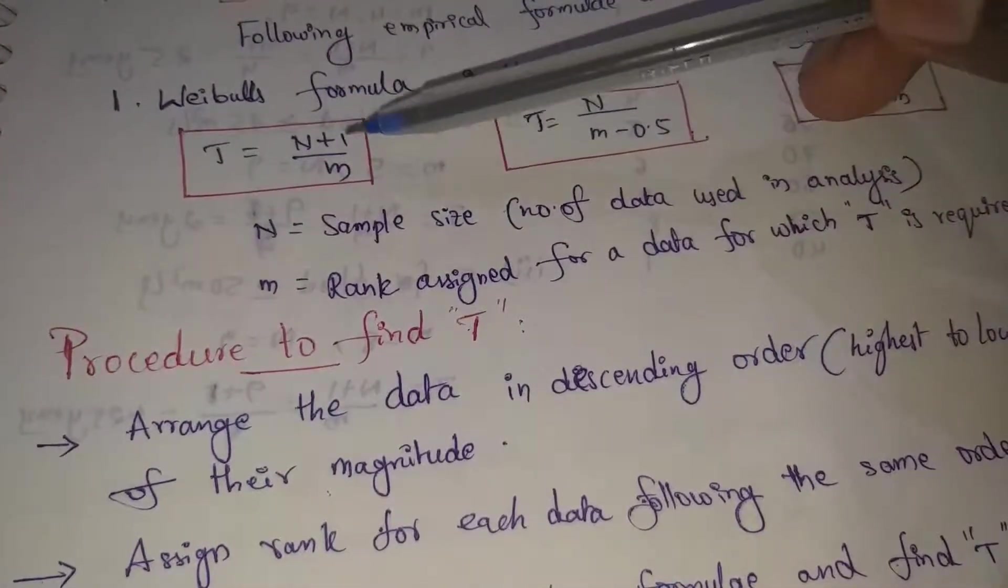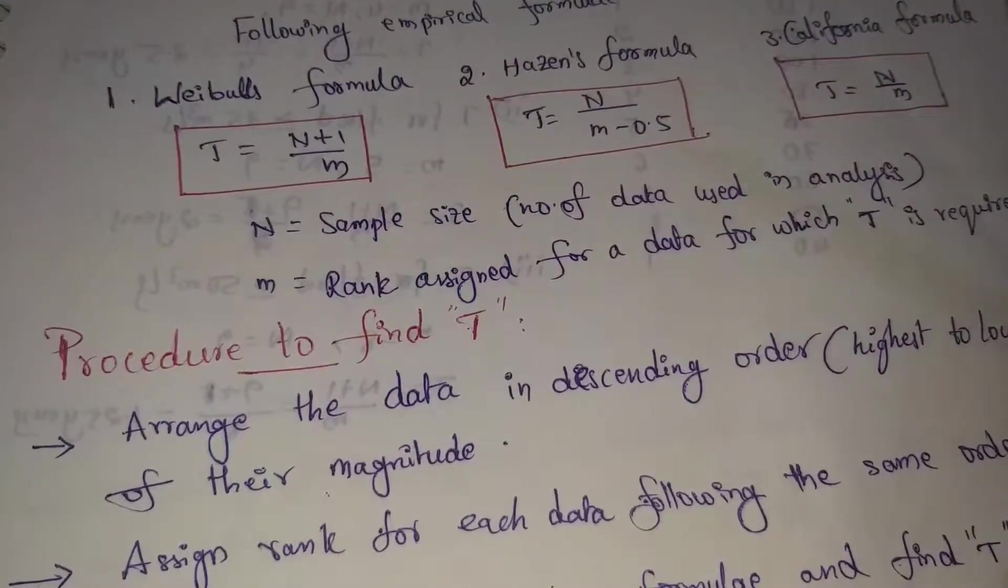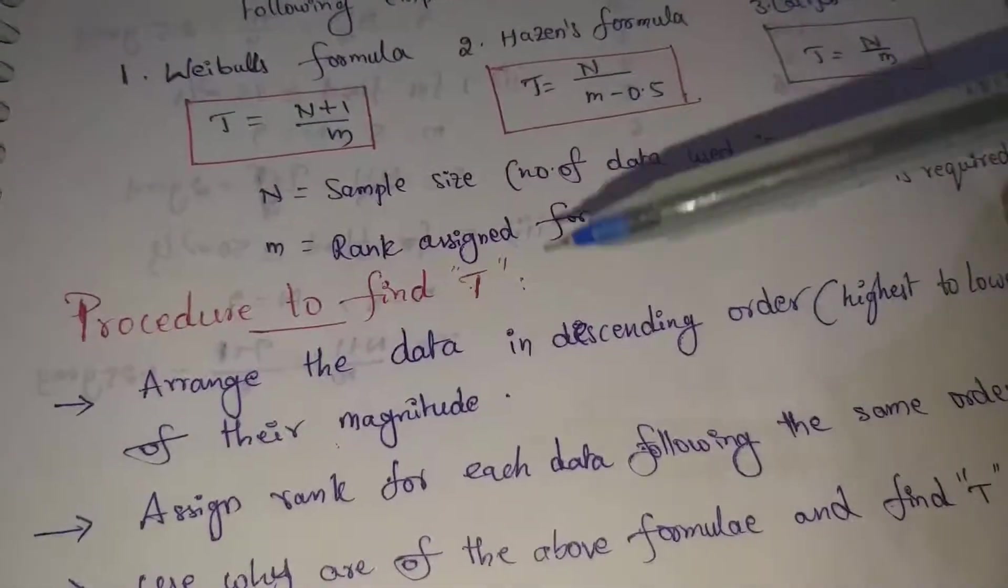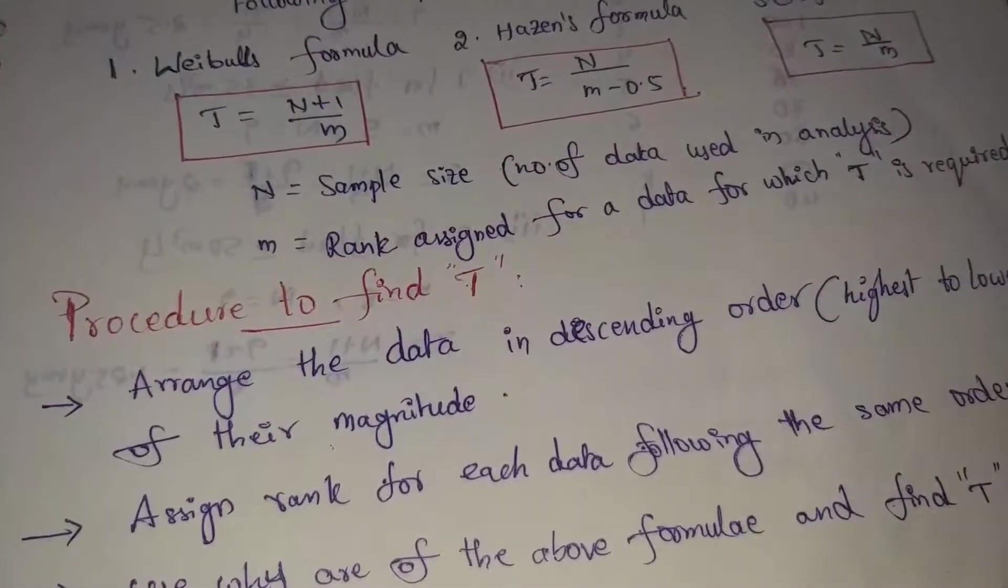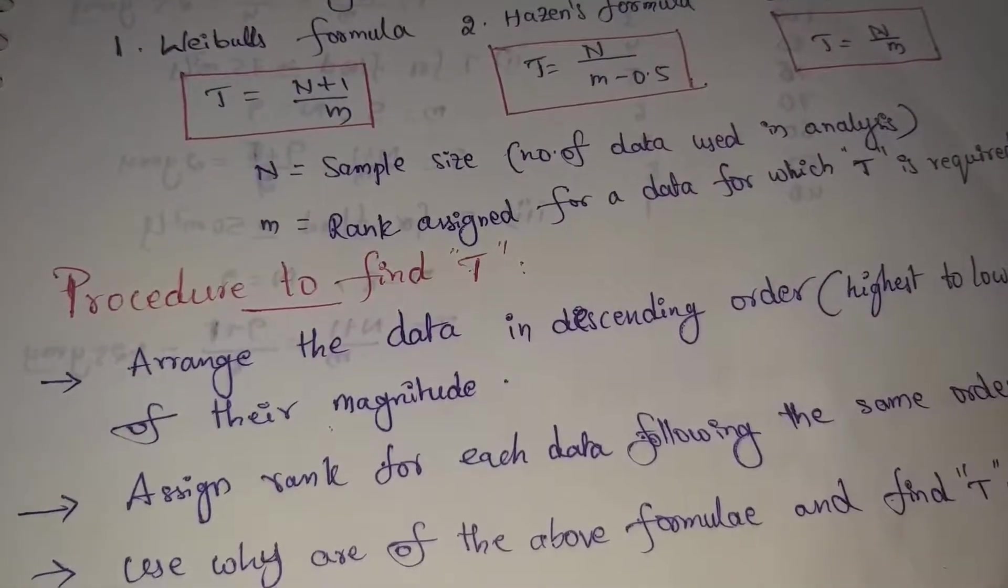We will use Weibull's formula T equals N plus 1 by m. For example, we will use some values to explain how to find out frequency.